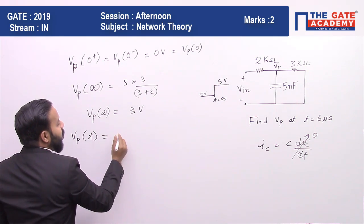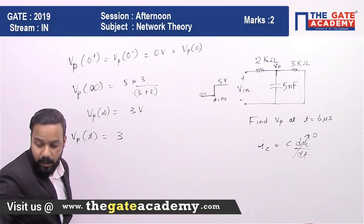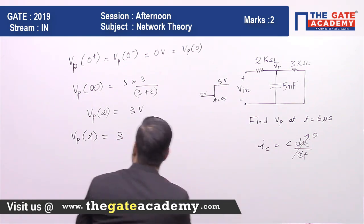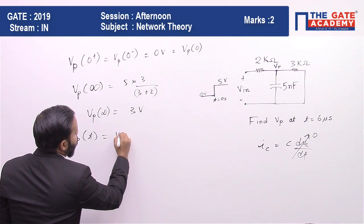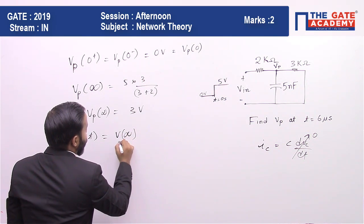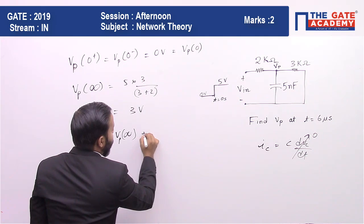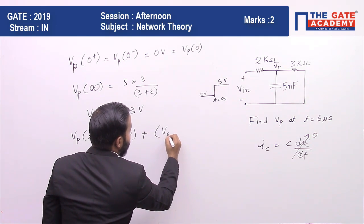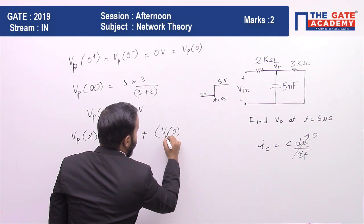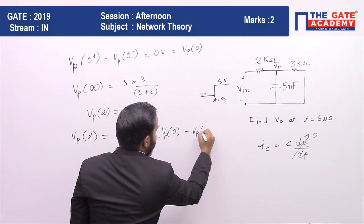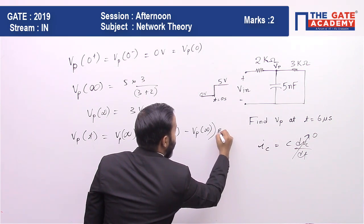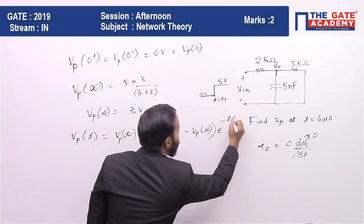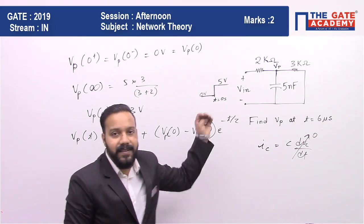The final value 3 volt. Let us write the expression: vp(∞) plus [vp(0) minus vp(∞)] multiplied by e to the power minus t by τ. Now what is τ for this RC circuit?